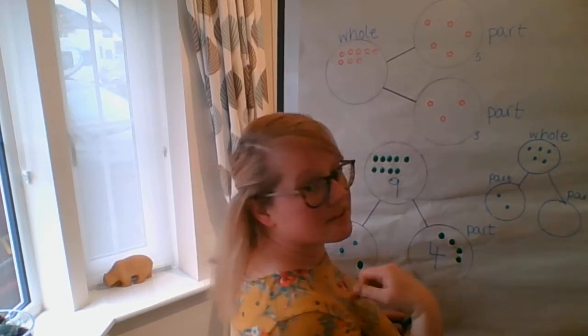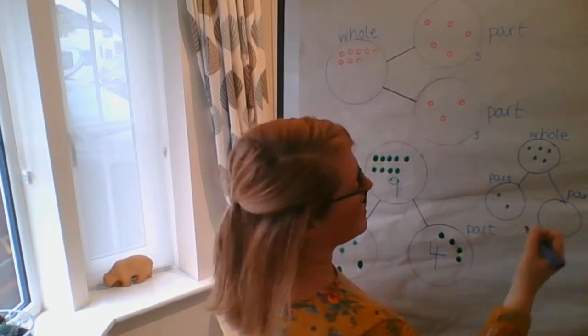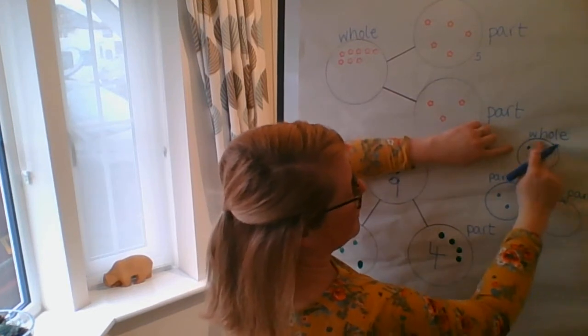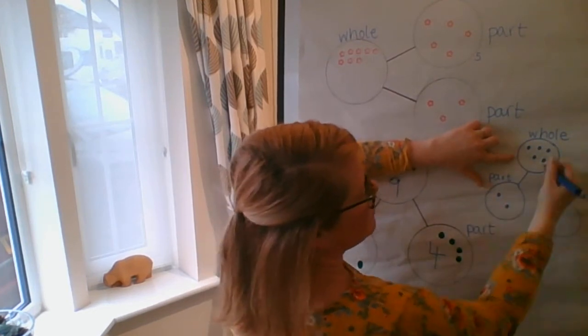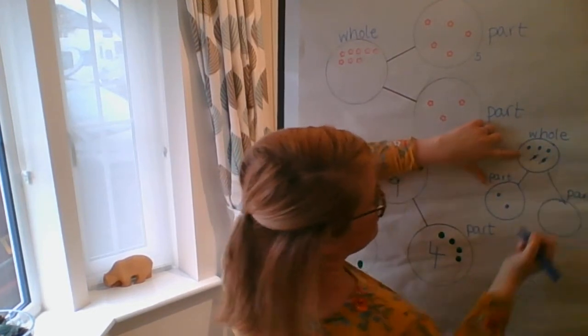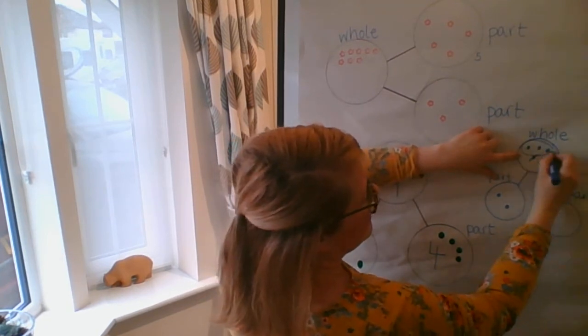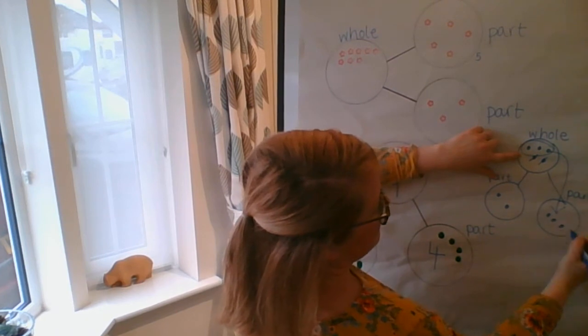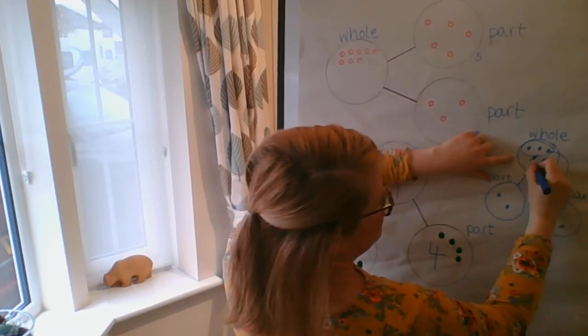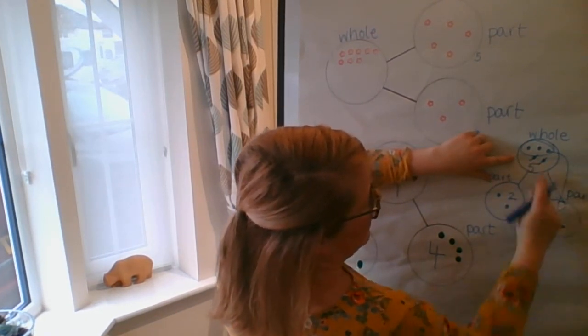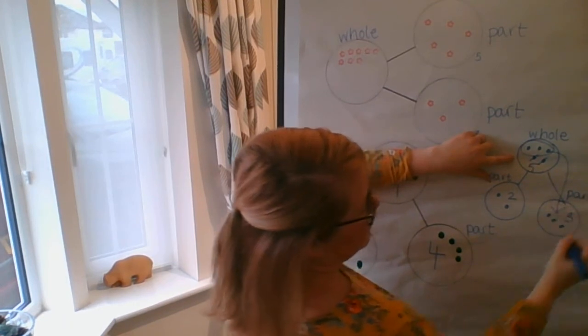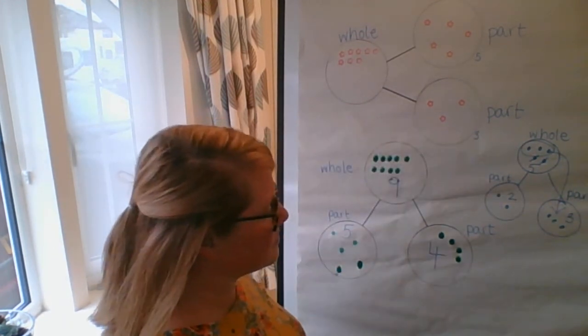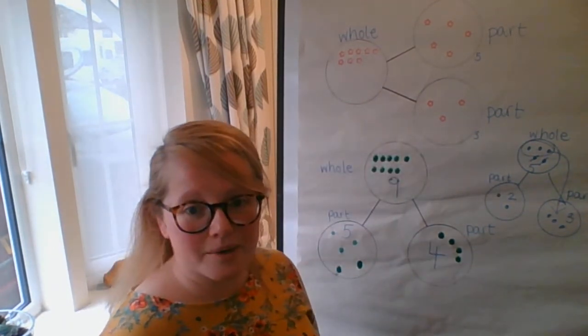So the easiest thing that I find to do this, to work this out, is to look at the whole value. I've got two as a part. So I'm going to take across two out of my whole value. And then this is my missing value. So this was five. This was two. And my missing value here is three. I hope that helps with your whole part model.